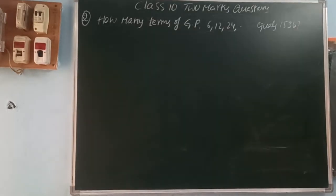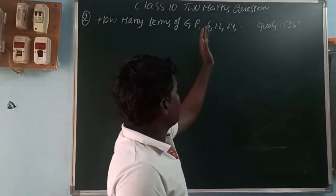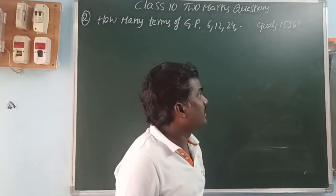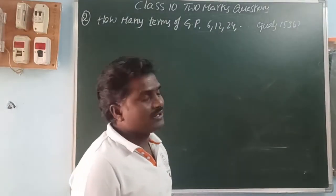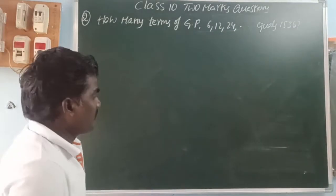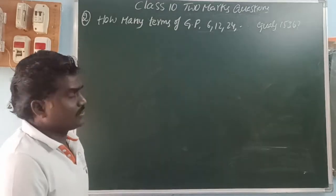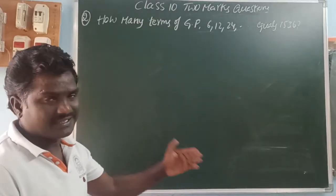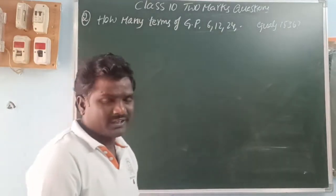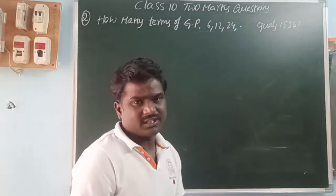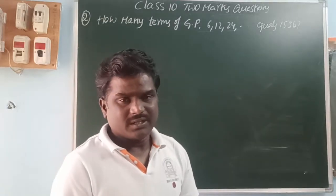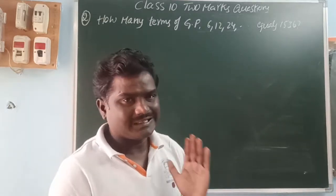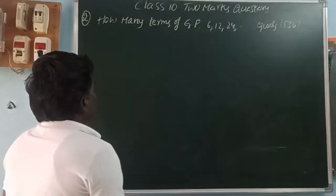Next question: how many terms of the GP 6, 12, 24, and so on equals 1536? We can find this by using the nth term formula to determine which term equals 1536.